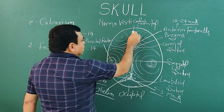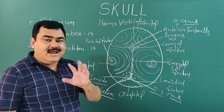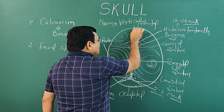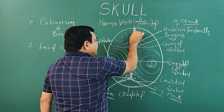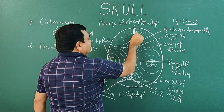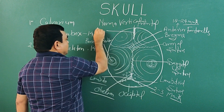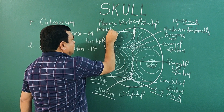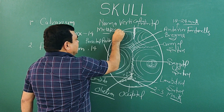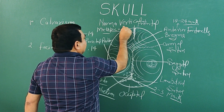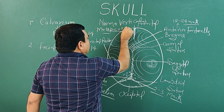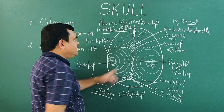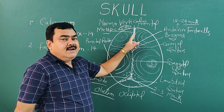In about three to eight percent of cases, a metopic suture is present. This suture persists in three to eight percent of cases and normally disappears by about six years of age.